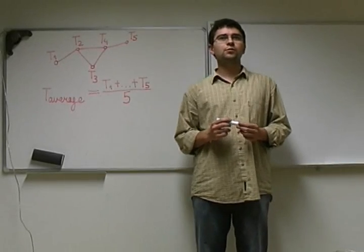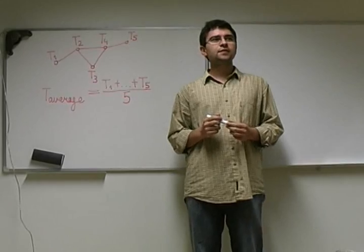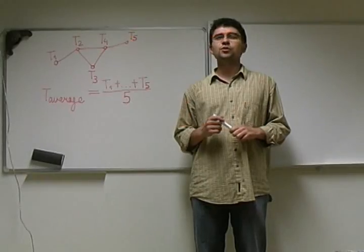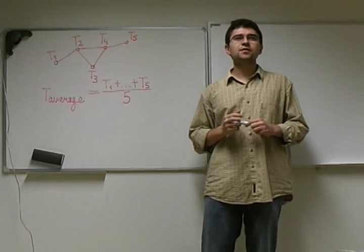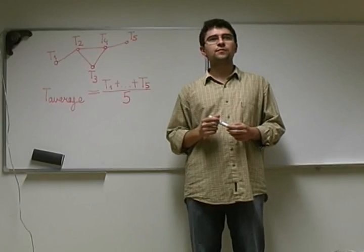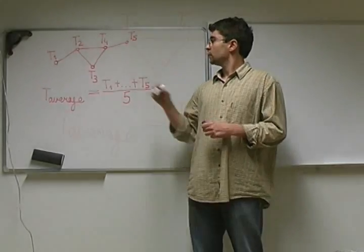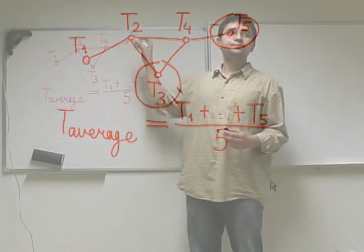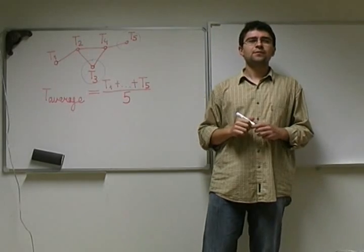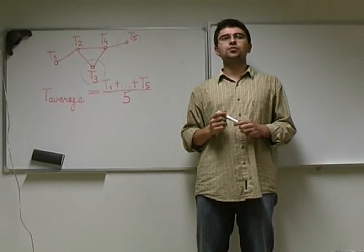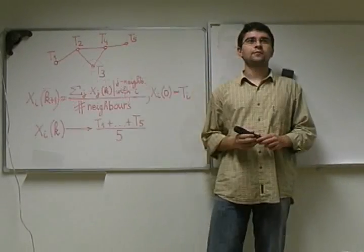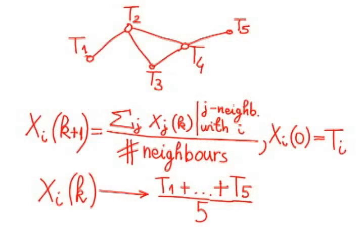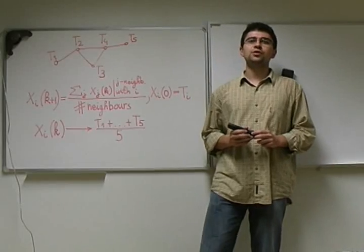I will explain the problem better in a well-known example of the consensus algorithm. Let's say that we have a network of intelligent sensors, and lines on the picture represent the existence of a communication channel between sensors. For example, the measurement of sensor 3 is not directly available to sensor 5. Our goal is that each sensor calculates the average of all measurements.